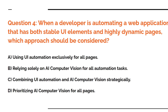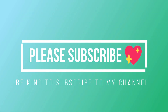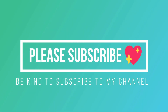The answer is combining UI automation and AI computer vision strategically. Thank you guys. Let me know how many of you were able to guess the right answers — please do comment and let me know. Thank you for watching, and let's meet in our next episode.